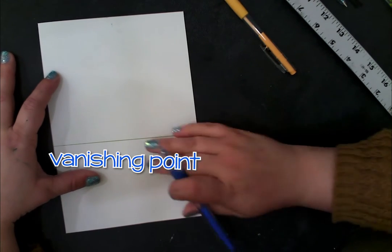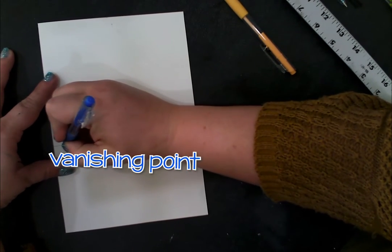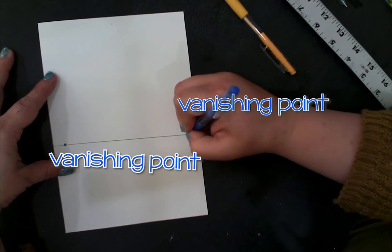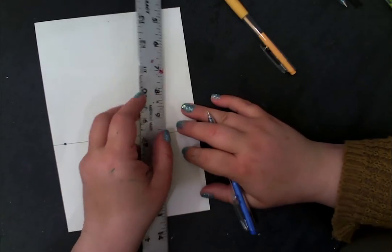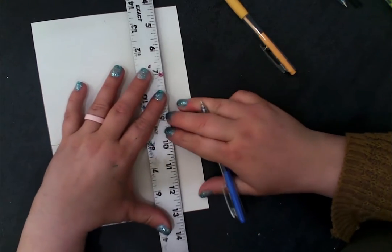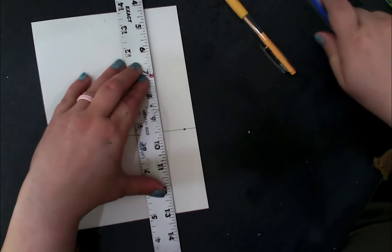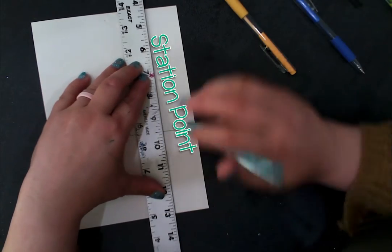But instead of having one vanishing point, we're going to drop in two vanishing points, and we're going to actually have extra guidelines this time. The first guideline I'm going to show you is called a station point.